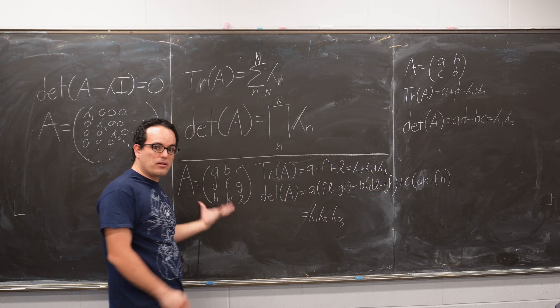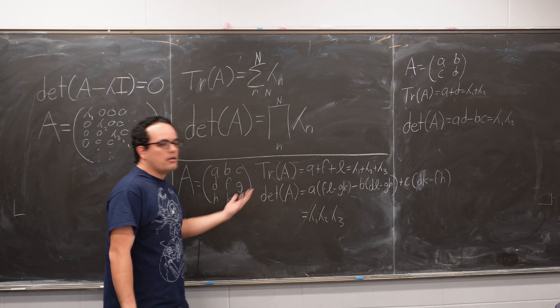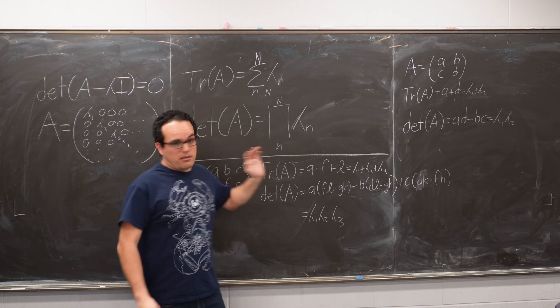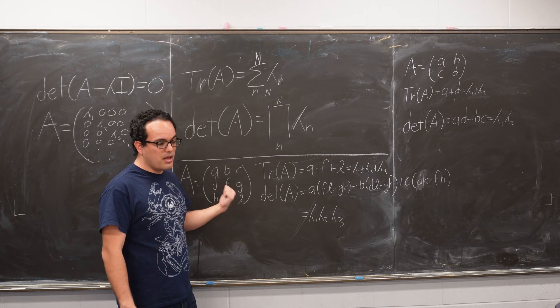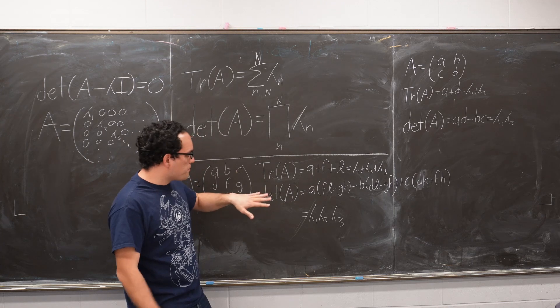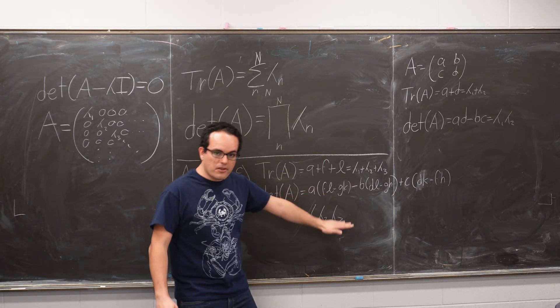And then the determinant of a 3x3 matrix is way more complex. But I mean, if you know the patterns, it's actually kind of easy to calculate. And at any rate, calculating the determinant of a 3x3 matrix is much easier than solving a cubic polynomial, let me tell you. Anyway, you know that this will be equal to λ1 times λ2 times λ3.